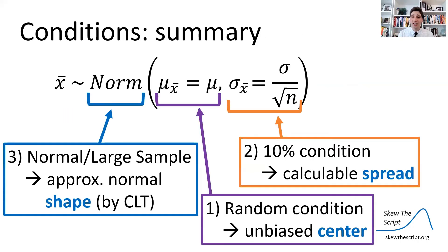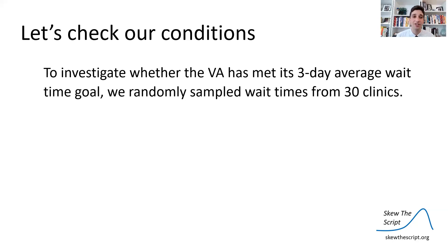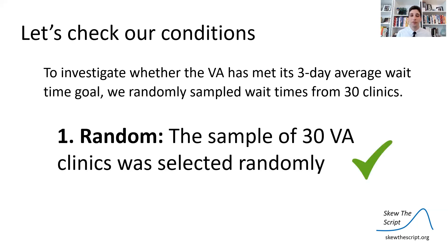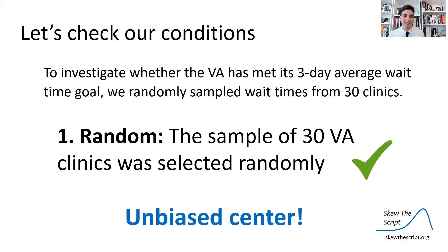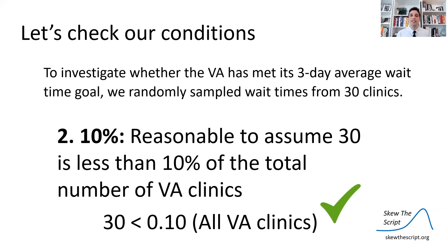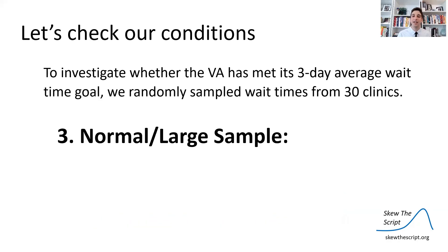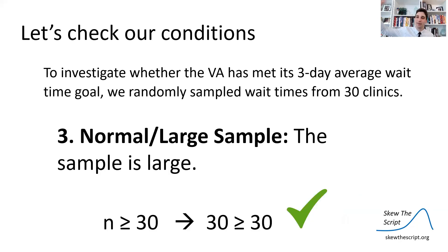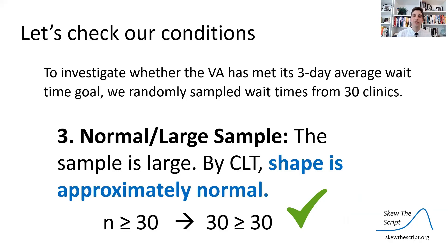So as a summary, here are the conditions and what they prove for modeling the sampling distribution for a mean. Putting it all together, let's check our conditions. We randomly sampled 30 clinics to investigate whether the VA has a three-day average wait time. One — random: the sample of 30 VA clinics was selected randomly, so we're good and will get unbiased estimates. Two — 10%: it's reasonable to assume that 30 is less than 10% of all VA clinics, since there are probably more than 300 in the country, so we have a calculable spread. Three — normal/large sample: the sample size is 30, so regardless of whether the population is normal or skewed, we have a sample size of 30 or more and we're good to go on having a roughly normal distribution by the central limit theorem.